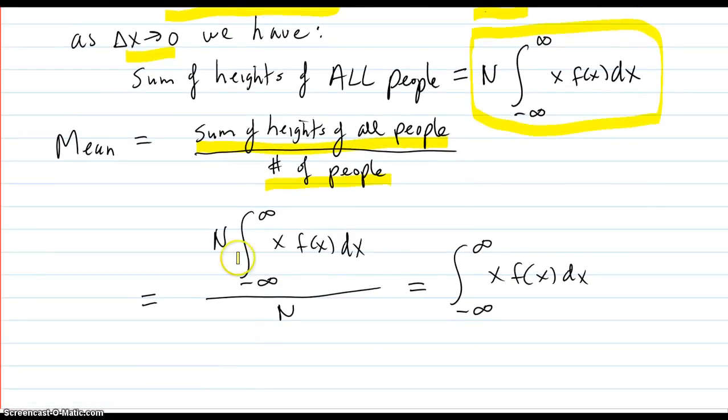And we just got through saying that the sum of heights of all the people was this part. And the number of total people is this. So these Ns cancel out and you get this integral here.